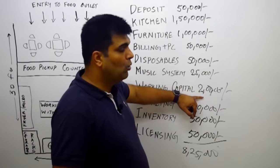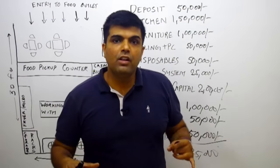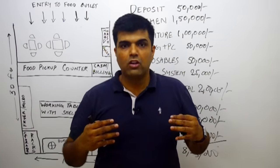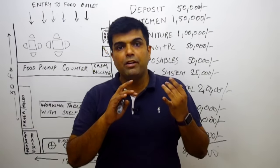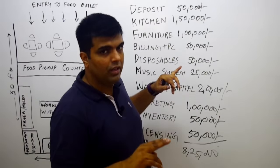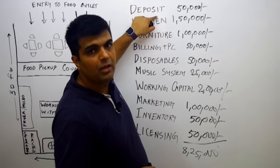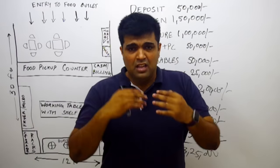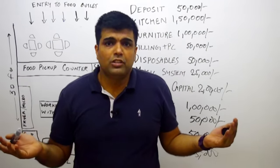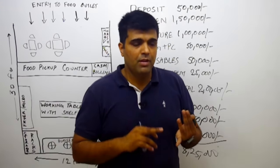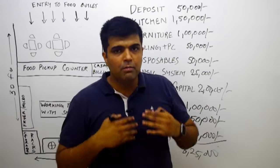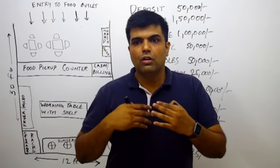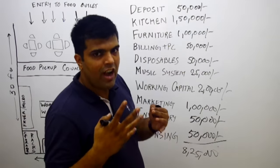Working capital is a very important thing. I have kept 2 lakh rupees as working capital. Working capital, or rolling money as we call it in the business, helps you take care of costs when your business has not yet picked up. It will be used for paying your rent, light bill, and staff salaries, because your restaurant is not going to start making money from day one. That working capital will help keep your restaurant's finances smooth so you don't go dry.